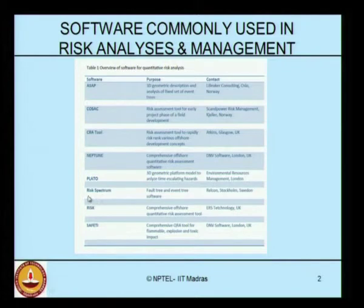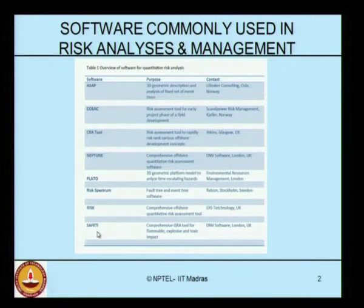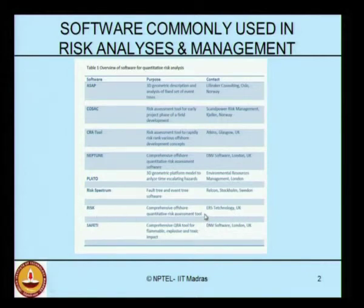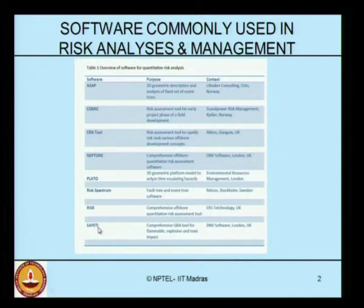You can also use Risk Spectrum, which can do detailed FTA and ETA for a given problem, developed by RELCON Sweden. For prospective risk analysis, you can use either Risk or Safety. Safety is developed by DNV UK, whereas Risk is developed by ERS Technology UK. Both are comprehensive offshore QRA tools. One difference is that Safety can also give you exposure assessment for flammable, explosive, and toxic impacts within a comprehensive QRA.